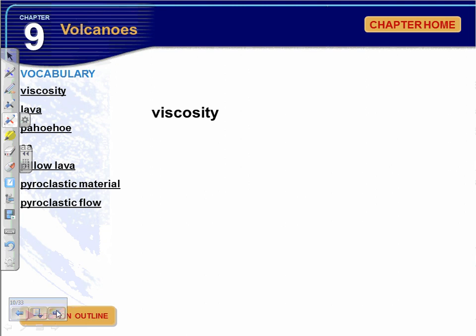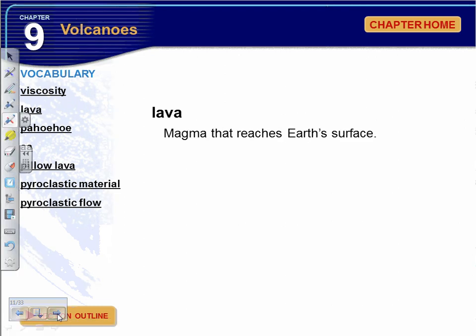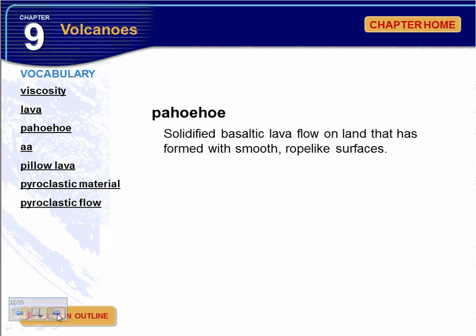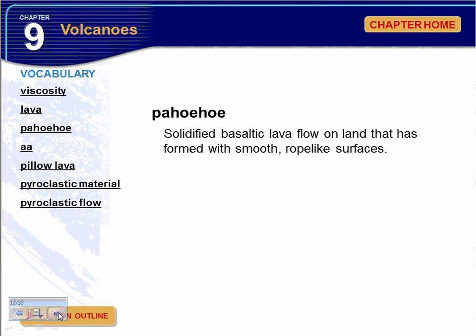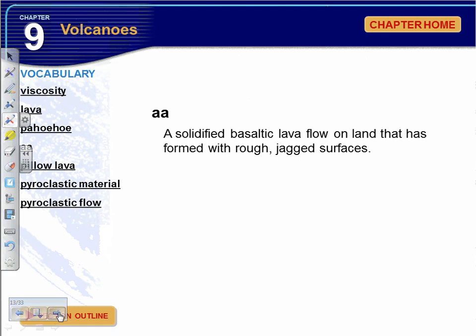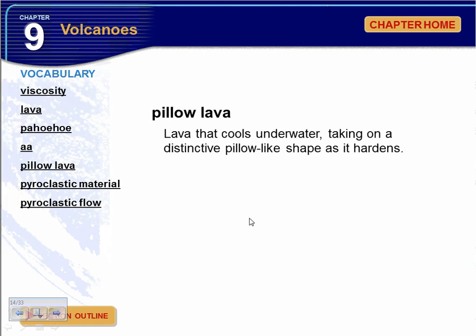The vocabulary for Section 2: Viscosity is a substance's resistance to flow. Lava is magma that reaches the earth's surface; magma that doesn't reach the surface remains magma. Pahoehoe — a Hawaiian term — is a solidified basaltic lava flow on land that has formed with smooth, rope-like surfaces. A-a, on the other hand, is a solidified basaltic lava flow on land that has formed with rough, jagged surfaces. Pillow lava is lava that cools underwater, taking on a distinctive pillow-like shape as it hardens.